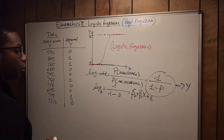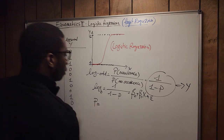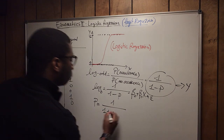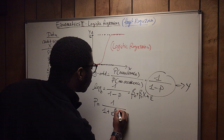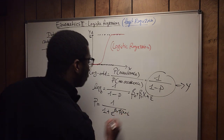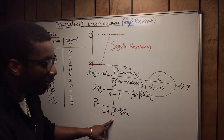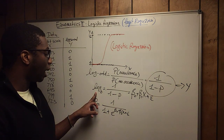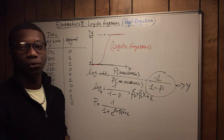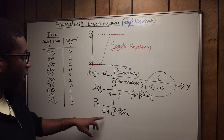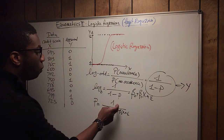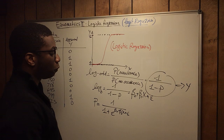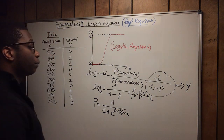That equation gives us: p = 1 / (1 + e^(β₀ + β₁x + ε)). You may ask where the exponential comes from — we had a log, and the inverse of the logarithm is the exponential. Because we take the inverse, the minus becomes a plus. So p equals one over one plus the exponential of beta zero plus beta one x plus the standard error.